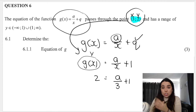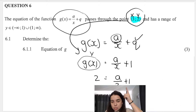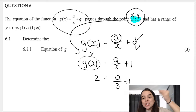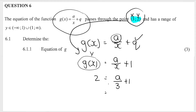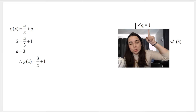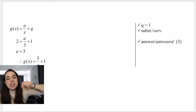Substituting in: 2 = a/3 + 1. Taking the plus 1 over: 2 minus 1 equals 1, so 1 = a/3. The inverse of divide by 3 is times by 3, so a equals 3. Therefore the equation for g(x) is 3/x + 1. You get marks for figuring out q is 1, for substituting in that point, and then for your final answer.